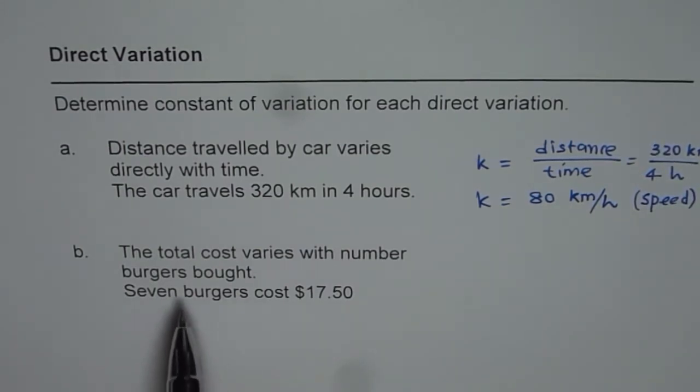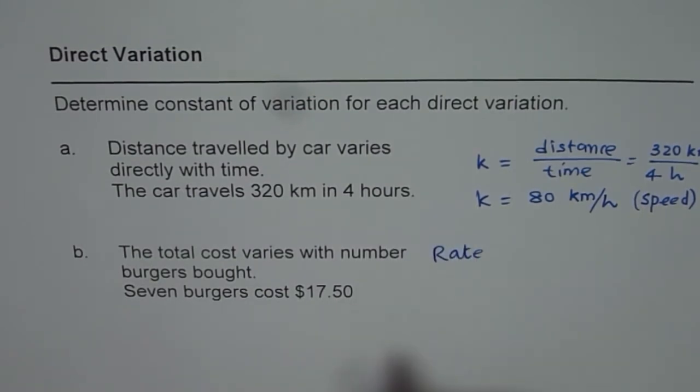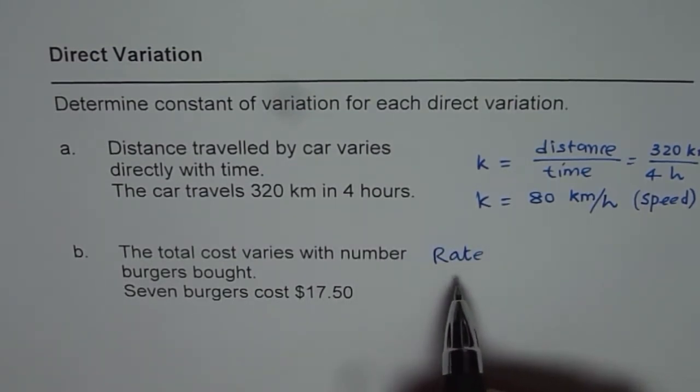The second one here is, total cost varies with number of burgers bought. So, that is the rate we are talking about. The rate is the constant which we are looking for.